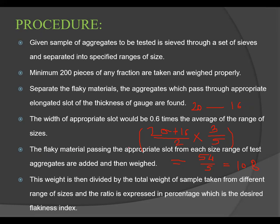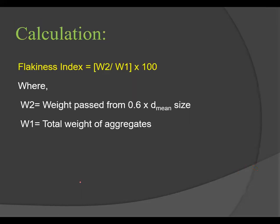The flaky material passing through the appropriate slot from each size range of the test aggregate is collected, added together, and weighed — this weight is recorded as W2. This weight is then divided by the total weight of the sample taken from all size ranges, and the ratio expressed as a percentage gives the desired Flakiness Index.